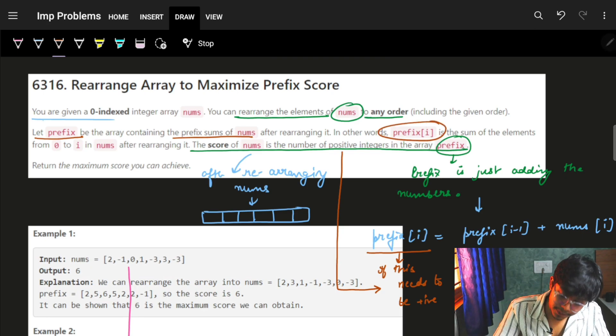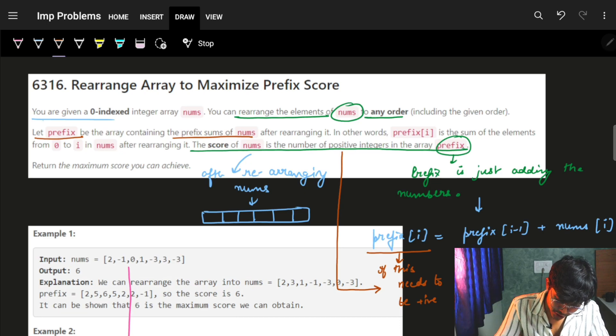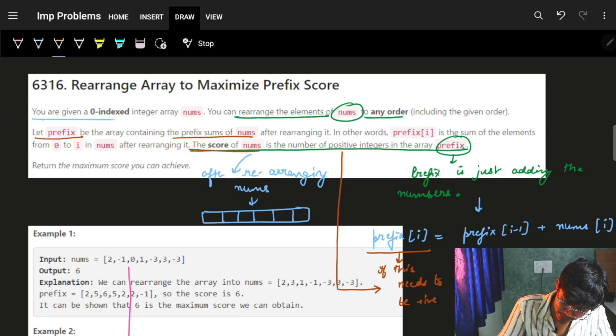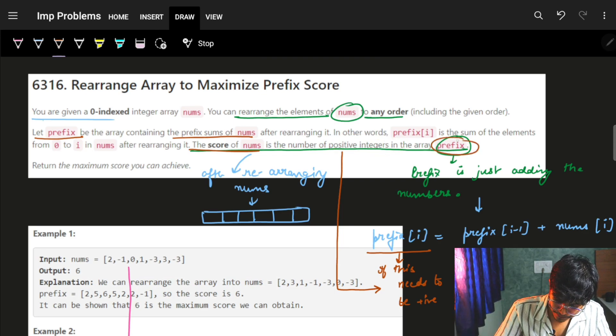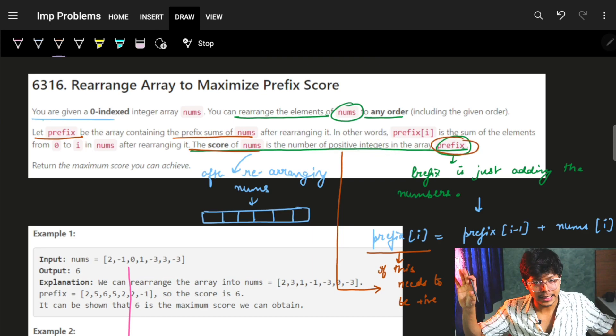The prefix is defined as the prefix sums of nums after rearranging. Then you have to find the prefix sum, and the score of nums is the number of positive integers in the array prefix.